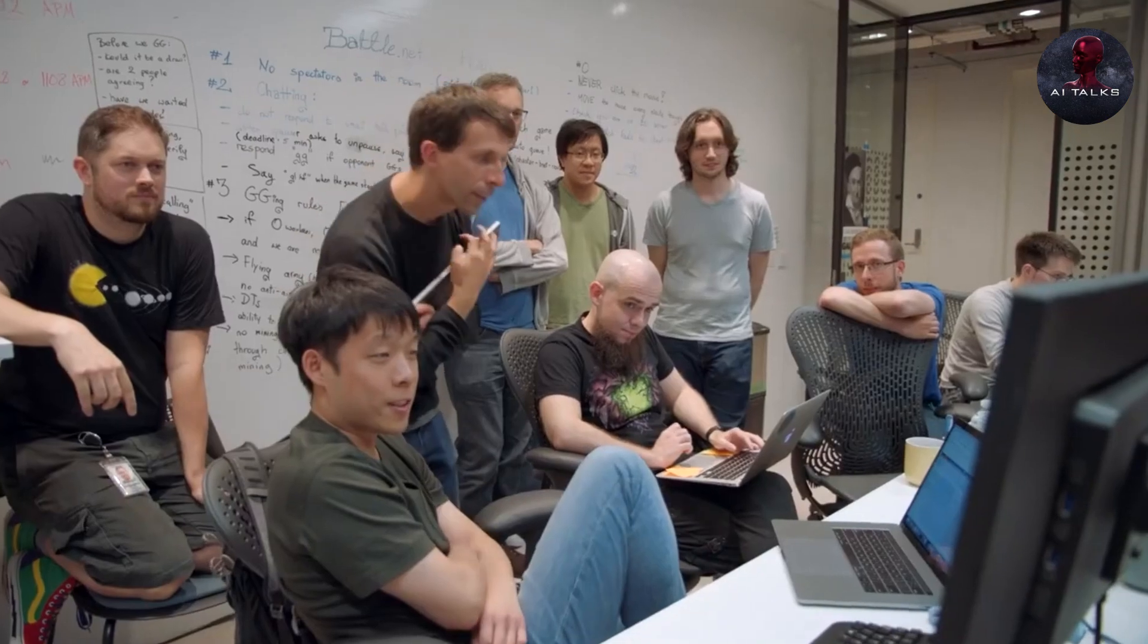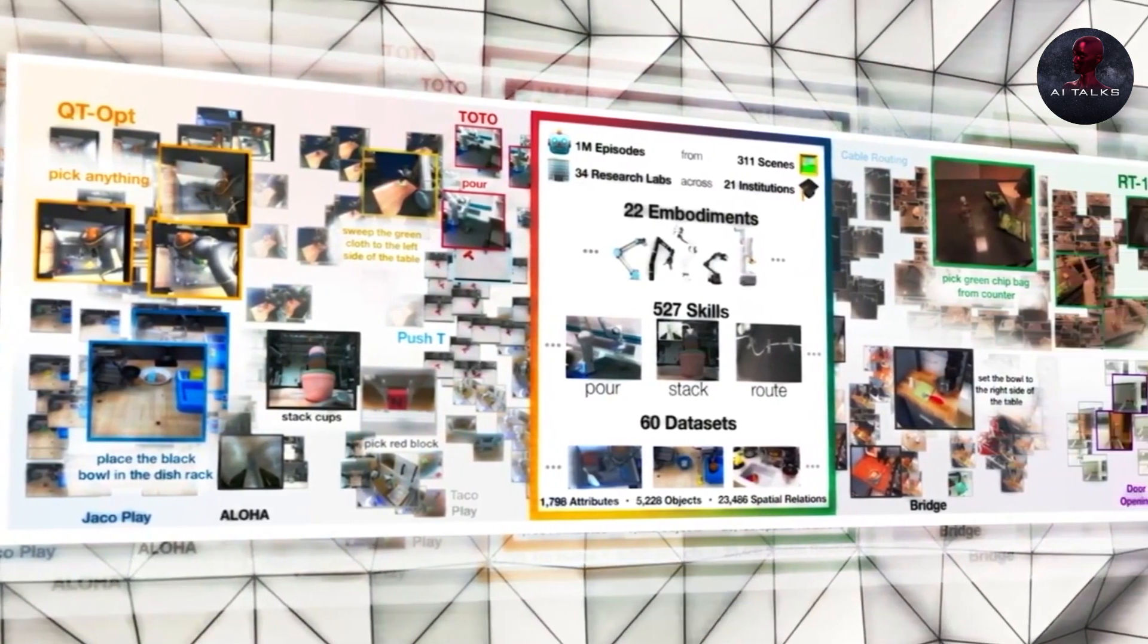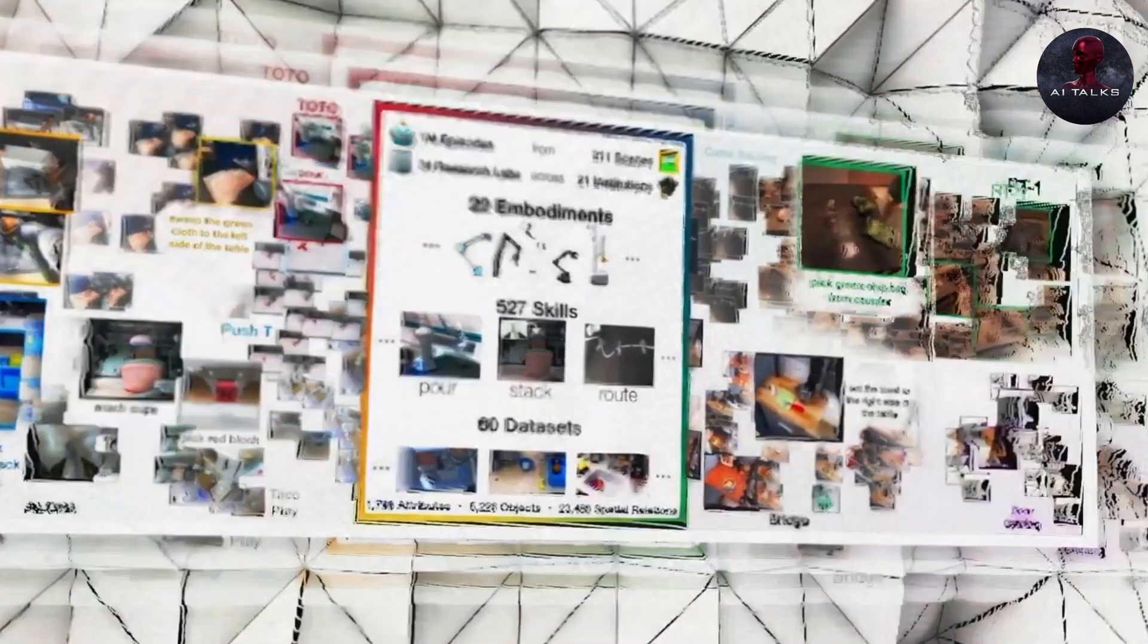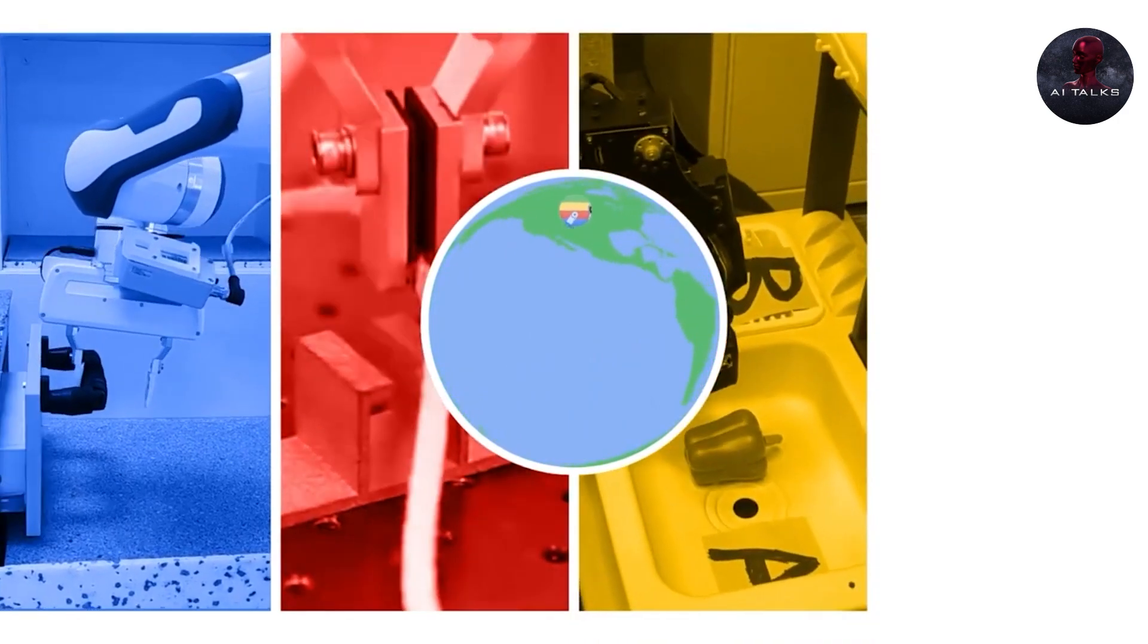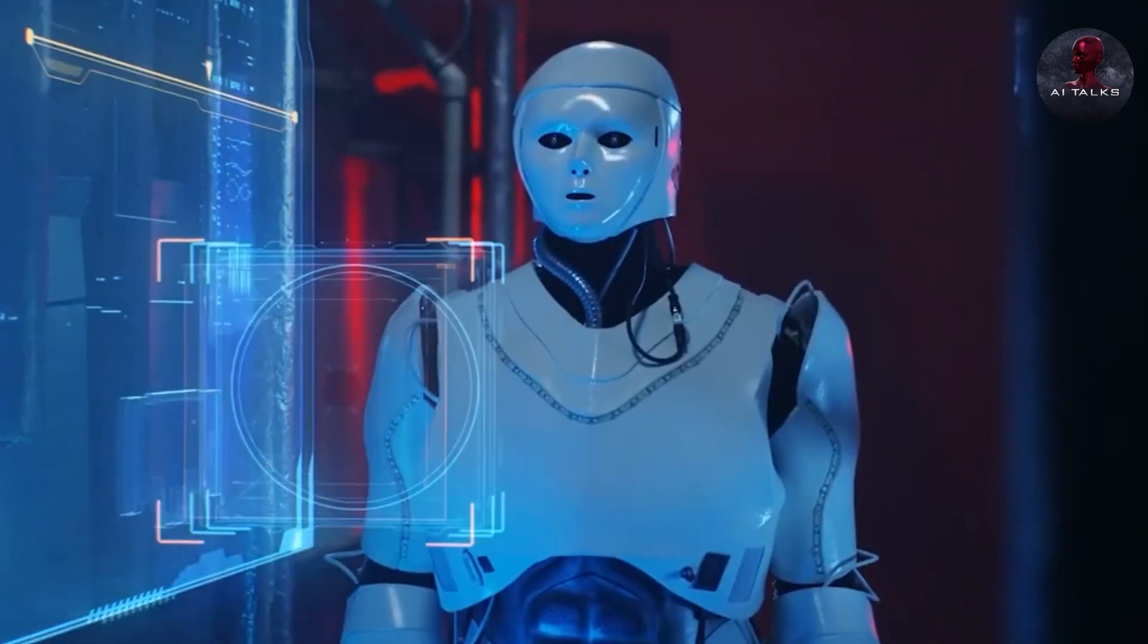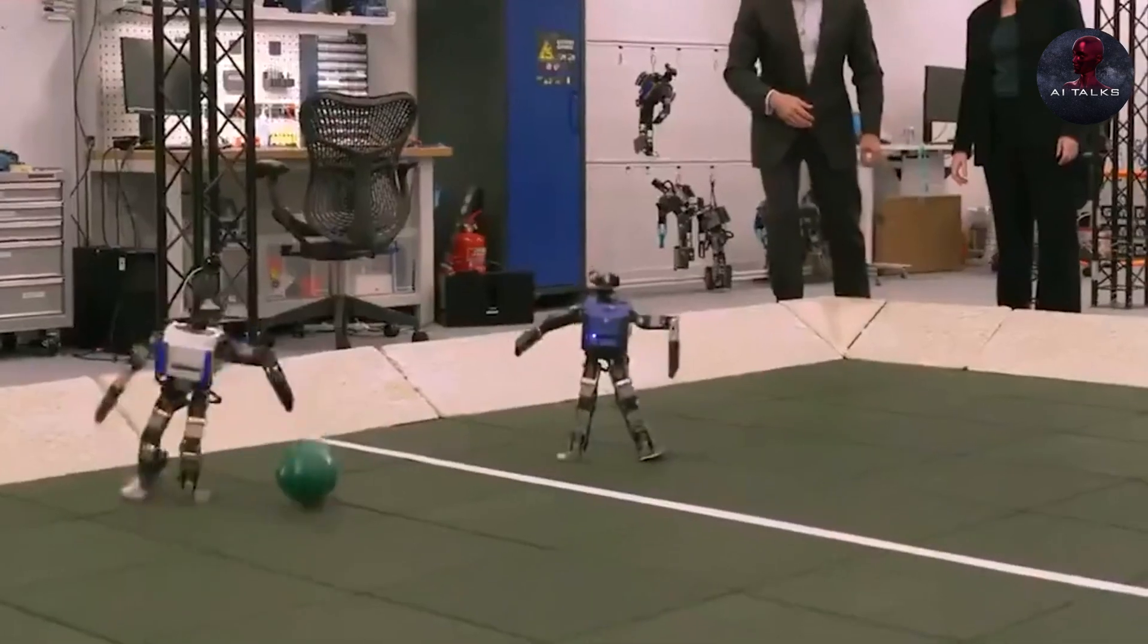Spectacularly. On these unfamiliar, out-of-distribution tasks, RT1X achieved over 50% success rate improvement. Meanwhile, RT2X tripled prior benchmarks on real-world robot skills. Proof these models can transfer knowledge to tackle new challenges.